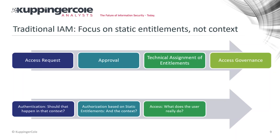We need to ask: are these entitlements correct, is the user behaving as expected, is something wrong? There are various levels where we need to analyze that. We need a different perspective in identity and access management — beyond static entitlements — understanding the context of users and their behavior to optimize entitlements, so an identity only has the least-privilege set of entitlements.